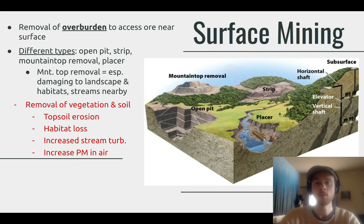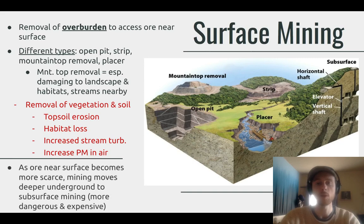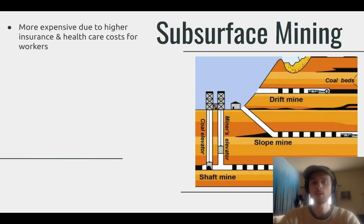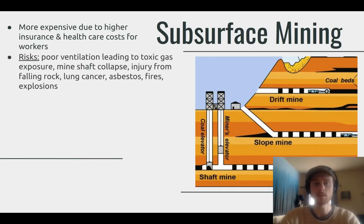We go deeper into the earth for subsurface mining when the ore deposit is too deep — as surface ore deposits are exhausted, we have to go deeper. Subsurface mining is quite a bit more expensive because workers have to be paid more for health insurance and companies may have to compensate families for accidents. There are many risks: poorly ventilated shafts can allow toxic gases like methane to build up, mine collapse can trap miners, asbestos can lead to lung cancer, and there can be fires or explosions.